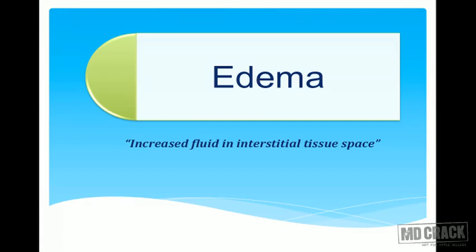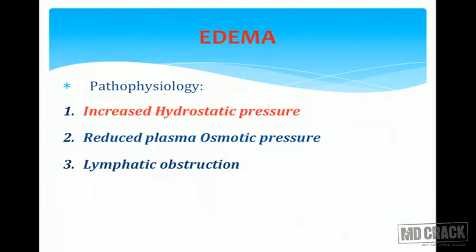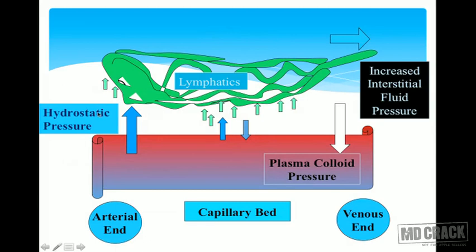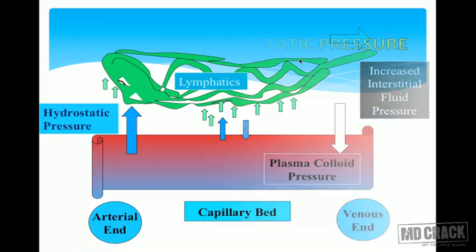With that brief introduction about normal hemostasis, let us see the disturbances with hemostasis. Edema is increased fluid accumulation in the interstitial tissue spaces. The three causes are: increased hydrostatic pressure, reduced plasma oncotic pressure, or lymphatic obstruction. Any of these can cause increased interstitial fluid accumulation, where fluid escapes from the intravascular compartment to the extravascular compartment, resulting in edema.